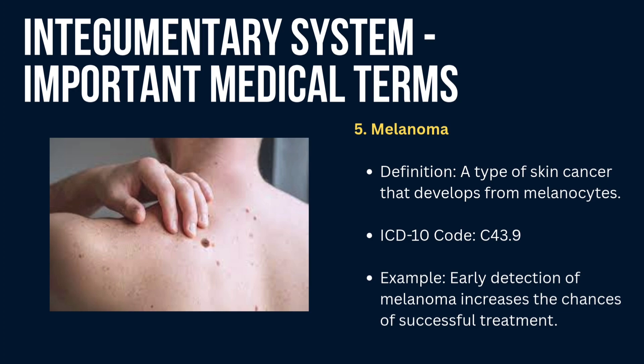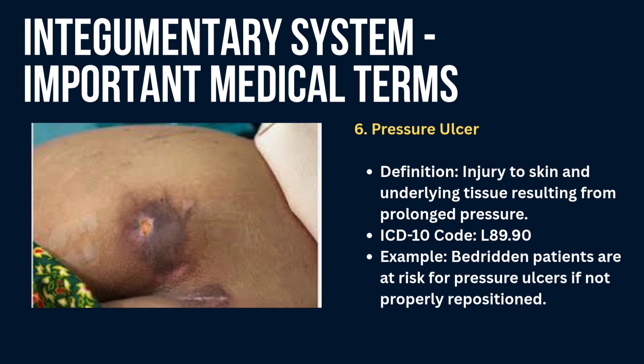Next is pressure ulcer — an injury to the skin and underlying tissue resulting from prolonged pressure. Example: bedridden patients are at risk for pressure ulcers if not properly repositioned.